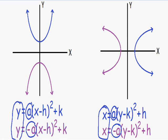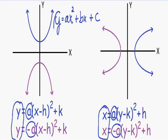One more thing: these equations are written in vertex form, but a parabola could also be written in standard form, which looks like y equals Ax squared plus Bx plus C. The same rules apply — since the equation is written in terms of y, the parabola is going to be pointed up or down. And since the A value is positive, it's going to be opening in the upward direction, like this blue graph here.